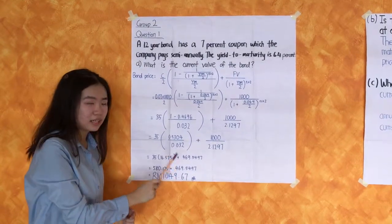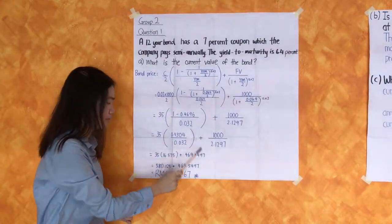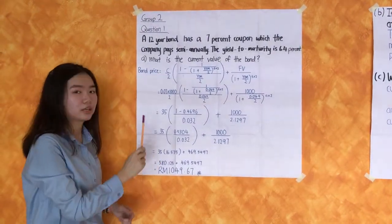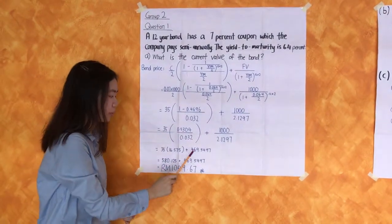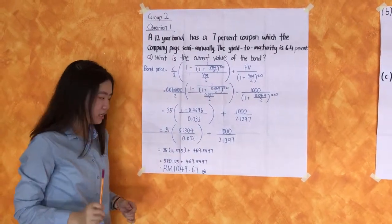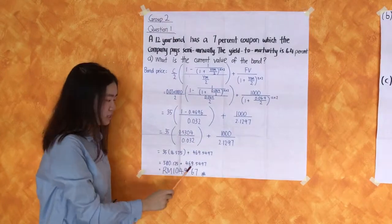Equal to 35 times 16.575 plus 469.5497, equal to 518.125 plus 469.5497, and the final answer is 1049.67.